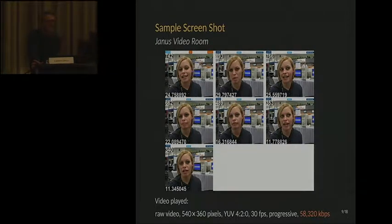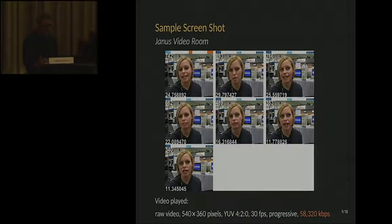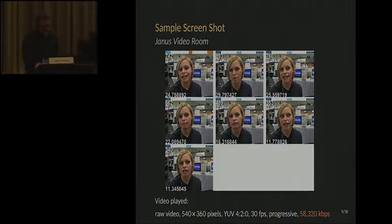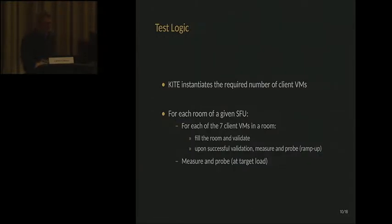This is a sample web page displayed by each SFU — a grid of three-by-three video elements. We use only seven of them because there are seven participants in the room. The video played is the same for everyone and is a raw video with no compression, which requires a very large bandwidth of more than 58,000 kilobits per second. So there will be some VP8 compression to fit within the test.